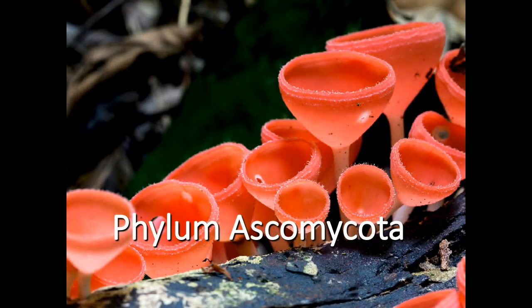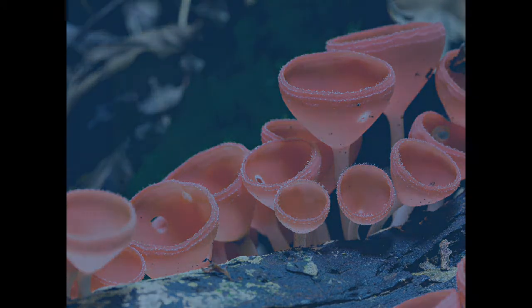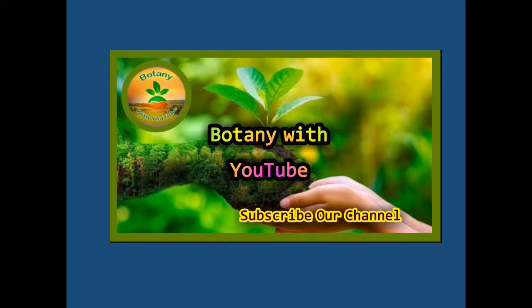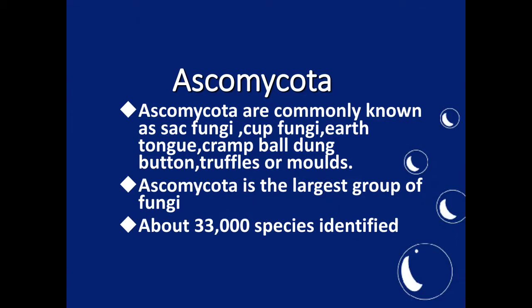You can see here the structure of phylum Ascomycota — they are cup-shaped fungi. Ascomycota are commonly known as sac fungi, cup fungi, earth tongue, crampol tongue, or molds. Ascomycota is the largest group of fungi; about 33,000 species have been identified.